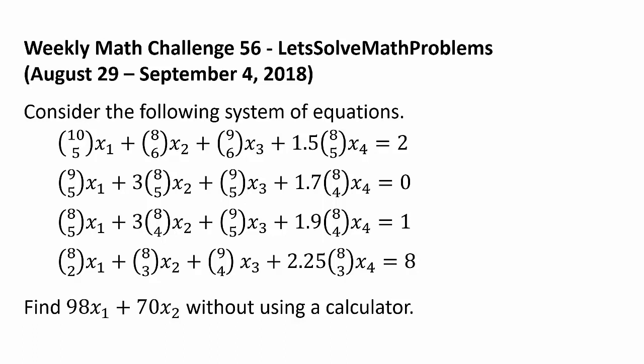8 choose 5 X1 plus 3 times X2 plus 9 choose 5 X3 plus 1.9 times 8 choose 4 times X4 is 0.78. And 8 choose 2 X1 plus 8 choose 3 X2 plus 9 choose 4 X3 plus 2.5 times 8 choose 3 X4 is 0.8.